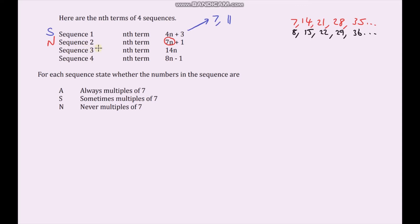For sequence 3, the nth term is 14n. We know that 7n is always a multiple of 7. Therefore 14n must also always be a multiple of 7, because to be a multiple of 14 it has to be a multiple of 7. So sequence 3 is always a multiple of 7.